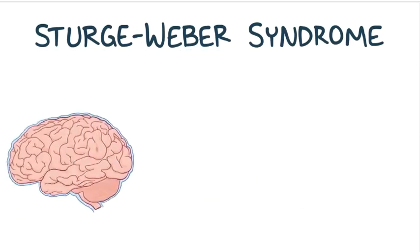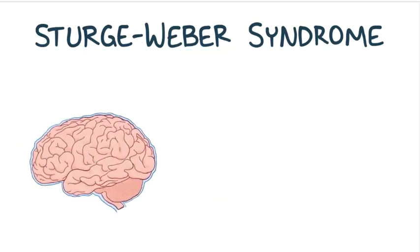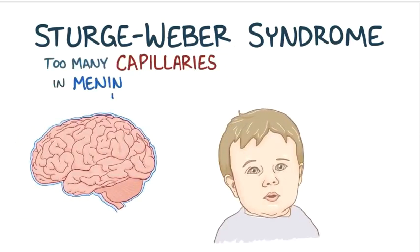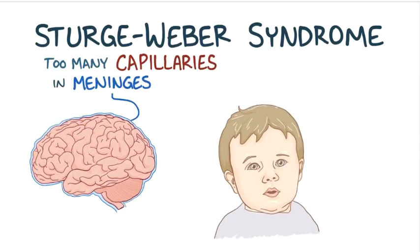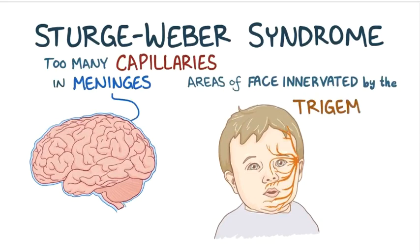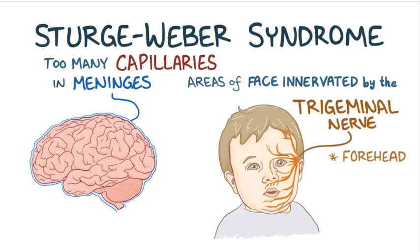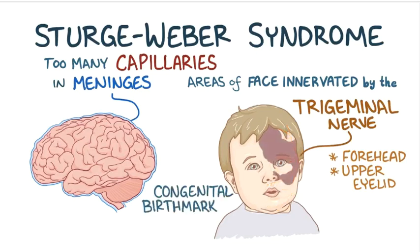That's because in Sturge-Weber syndrome there are too many capillaries in the meninges covering the brain, as well as in some areas of the face that are innervated by the trigeminal nerve, like the forehead and the upper eyelid. In Sturge-Weber syndrome there is often a congenital mark, also known as a birthmark, called a port wine stain.